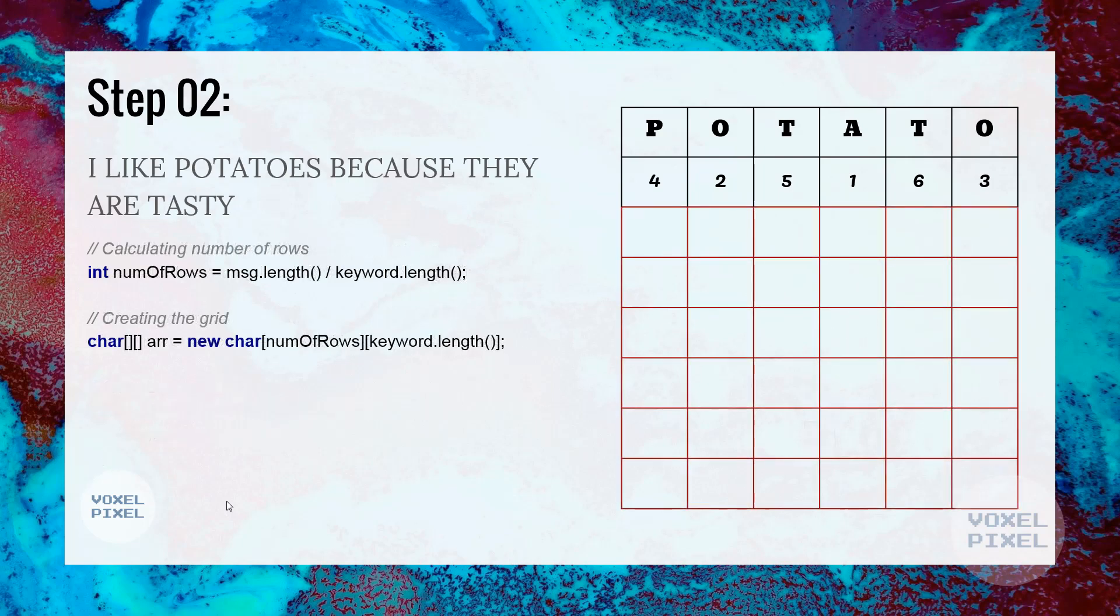We will determine size of the grid. For that, we will first calculate the number of rows and that we can obtain by length of the message divided by length of the keyword.